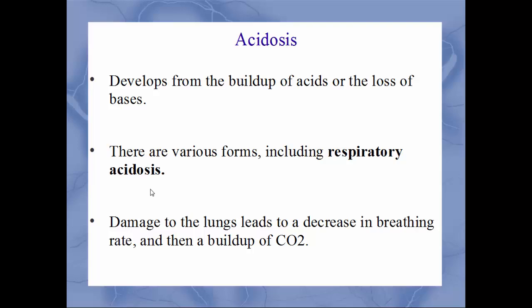Respiratory acidosis occurs when there is damage to the lungs — such as a tumor, injury, emphysema, or other lung disease. This damage leads to a decrease in breathing rate, causing a buildup of CO₂. That CO₂ combines with water to form carbonic acid, which breaks apart releasing hydrogen ions, making the blood more acidic.